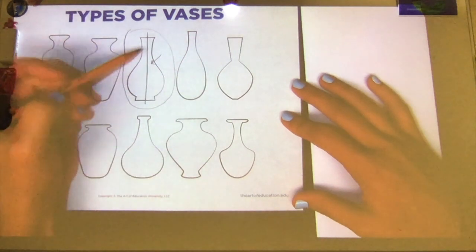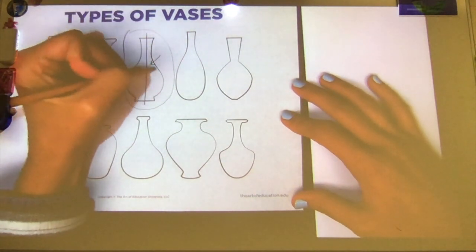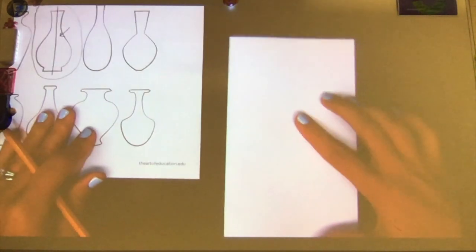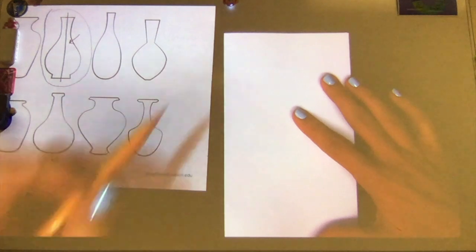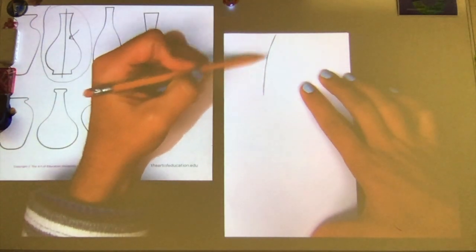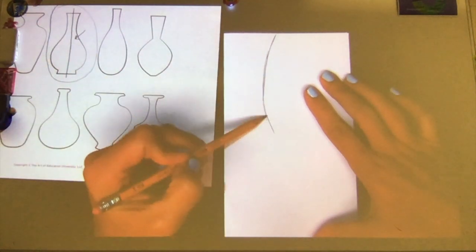So in order for me to make my vase look like this one, I'm going to try to draw this soft curvy line just like that. So I'm going to start at the top of my paper. And I'm going to draw this soft line and I'm going to bring it out.